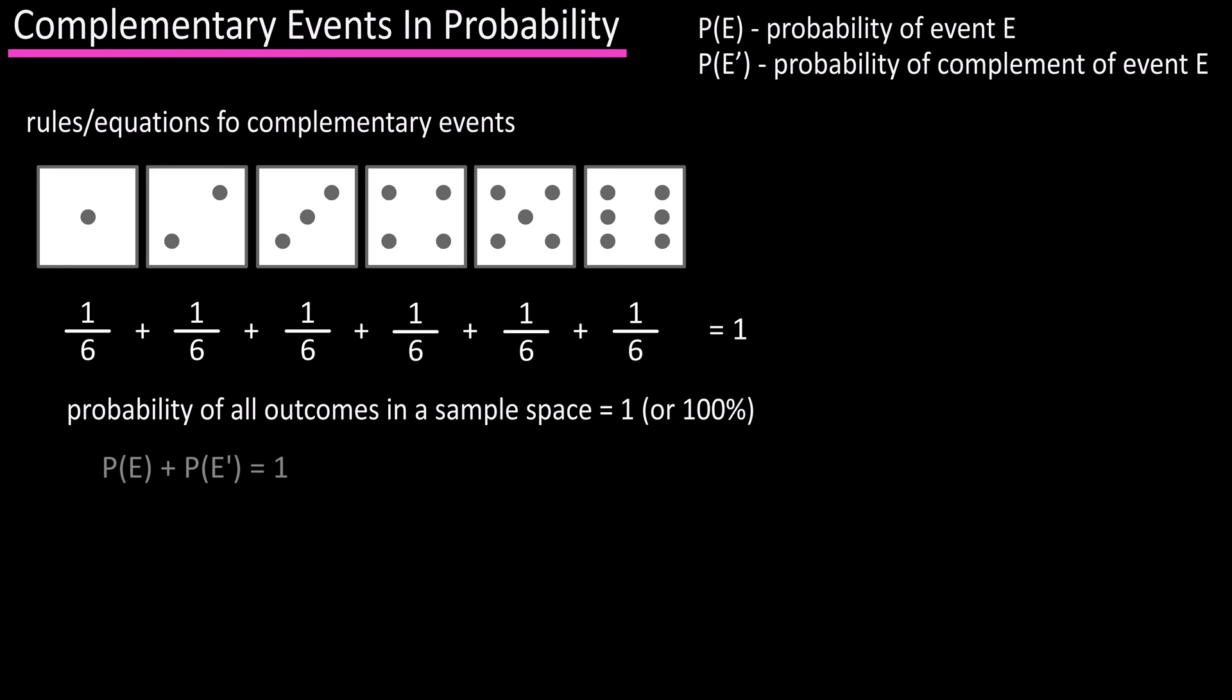With that knowledge, the probability of event E plus the probability of E prime equals 1. For instance, in our example, rolling a 1 or a 2 in a die would be the probability of event E, and rolling a 3 through a 6 would be the probability of E prime. If we add probability of E and E prime, we get 1.